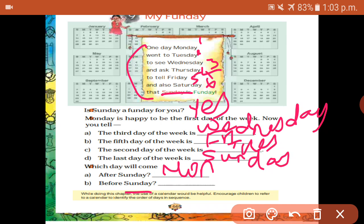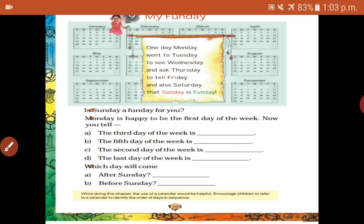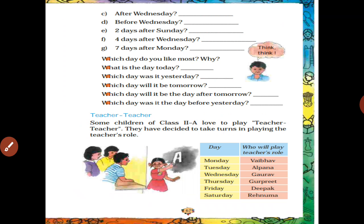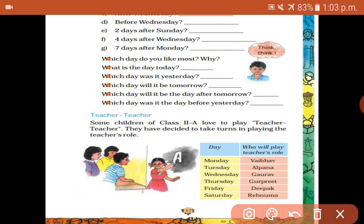Next, before Sunday, what is the day? Saturday. After Wednesday, what day comes? Thursday. Before Wednesday — Tuesday.